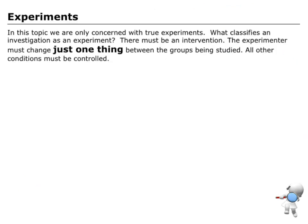So here's a little, a bit more explanation here. Then an experiment must change only one thing between the groups that are being studied. All other things, all other conditions must be controlled.